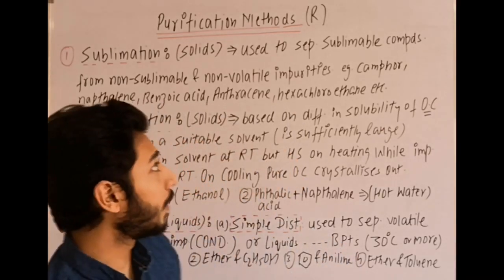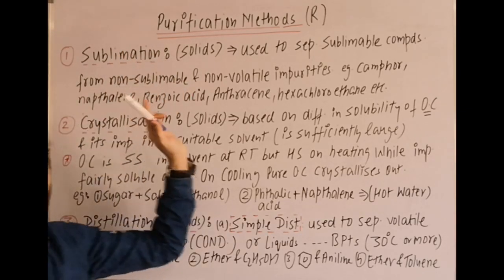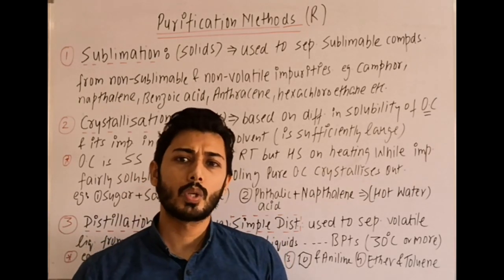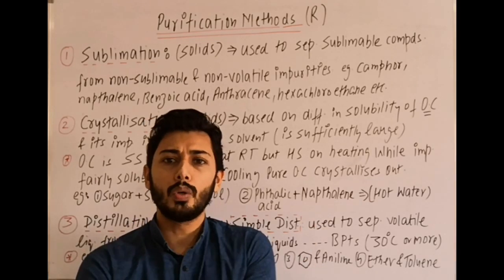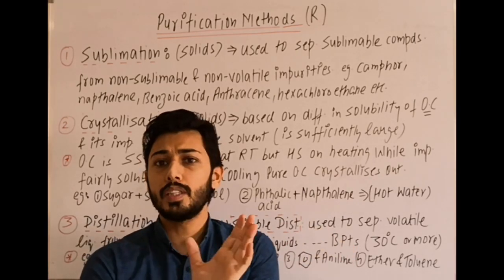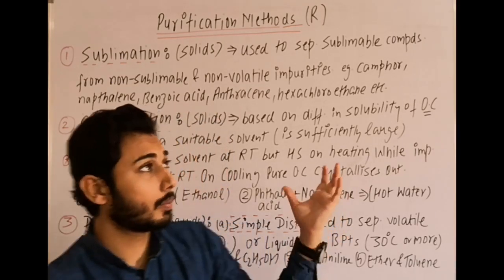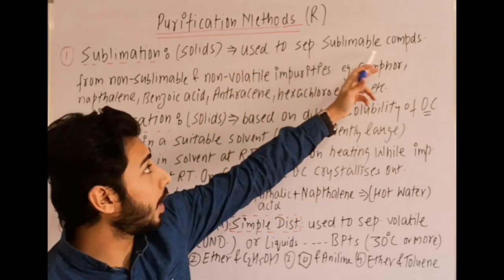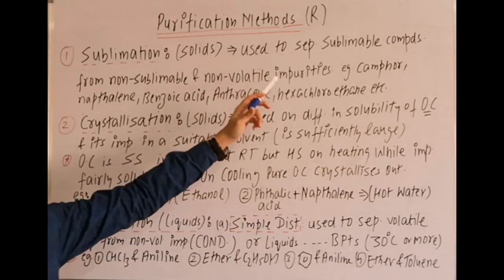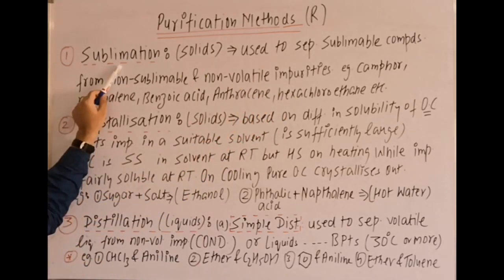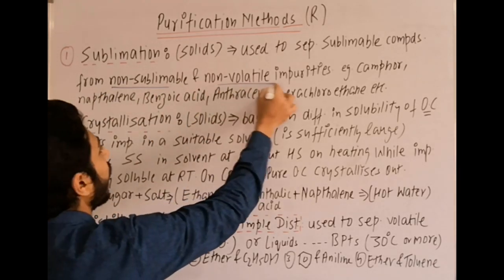The first method is sublimation, used for purification of solids. Some solid substances on heating directly go from solid state to vapor state, and on cooling their vapors directly return to the solid state without passing through the liquid state — this is sublimation. It is used to separate sublimable compounds from non-sublimable and non-volatile impurities.